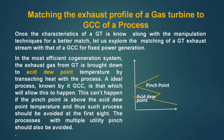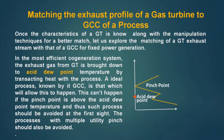Let us see when a co-generation system in which we are producing power and the hot gas from the gas turbine is also used as a hot utility. In such a co-generation system, how the hot gas from the GT can be used optimally. In most efficient co-generation systems, the exhaust gas from the GT is brought down to the acid dew point temperature by transacting heat with the process, because we cannot go below the acid dew point temperature — otherwise condensation of acid will take place in the gas phase and that will erode the equipment handling the gas.